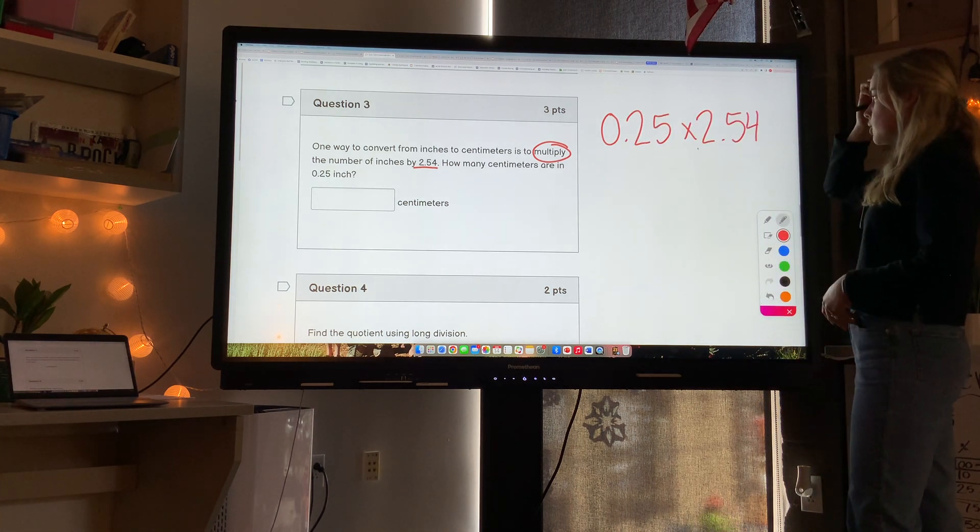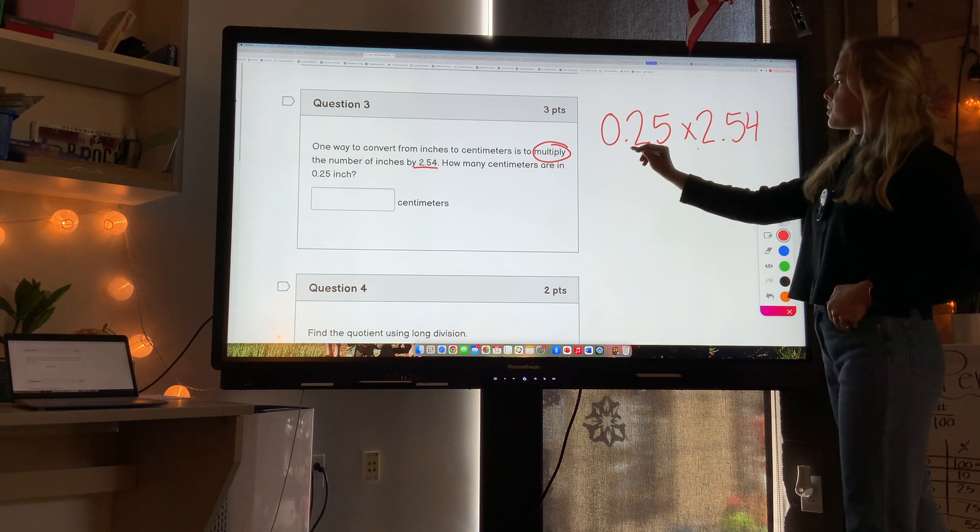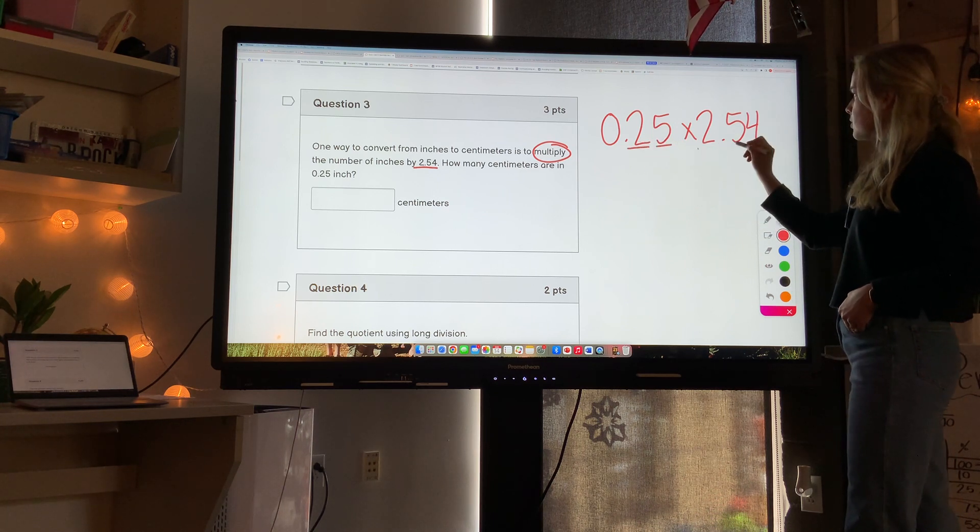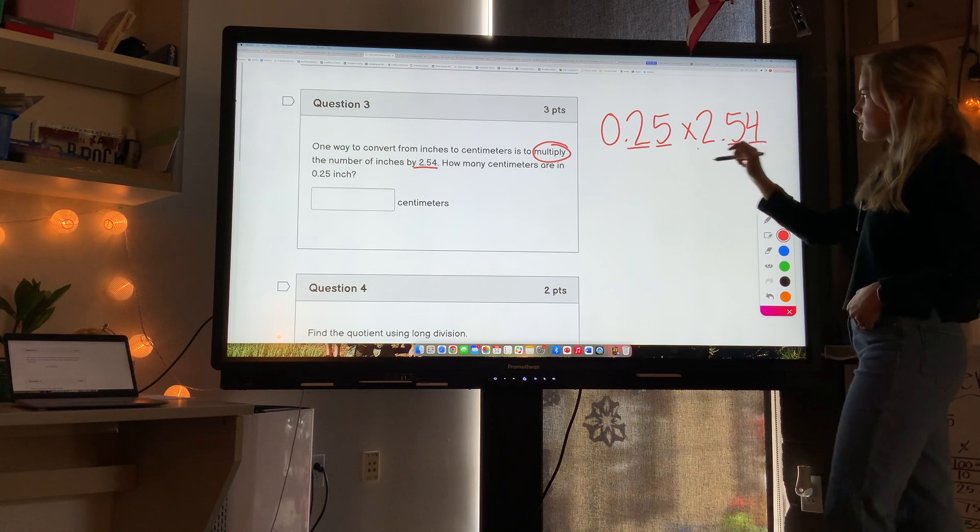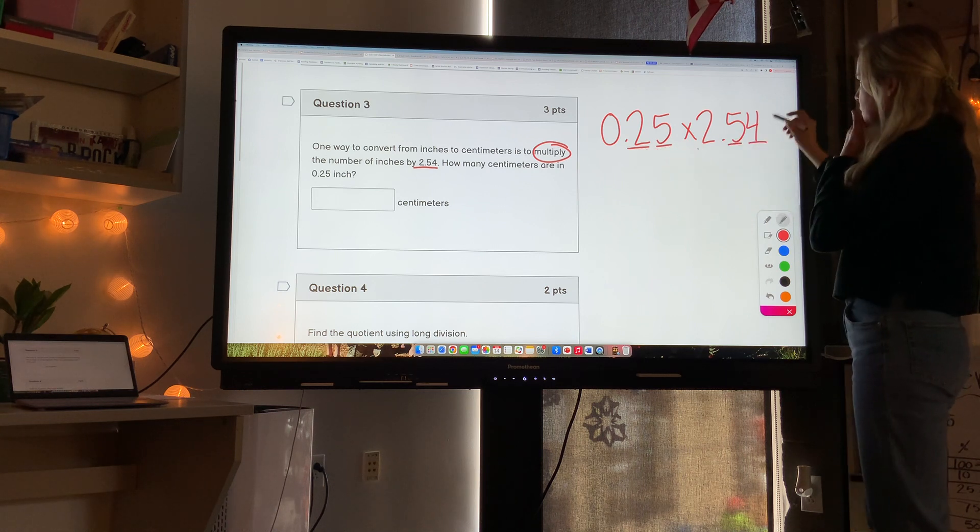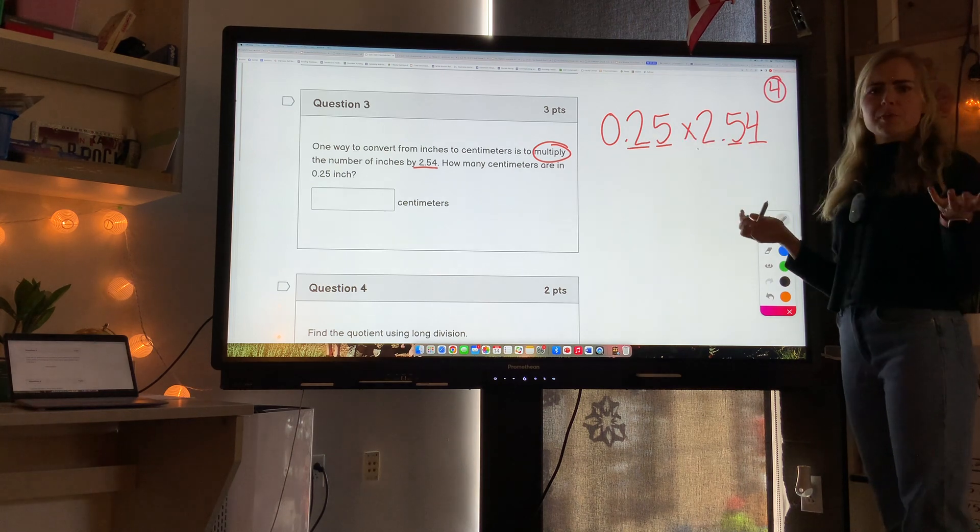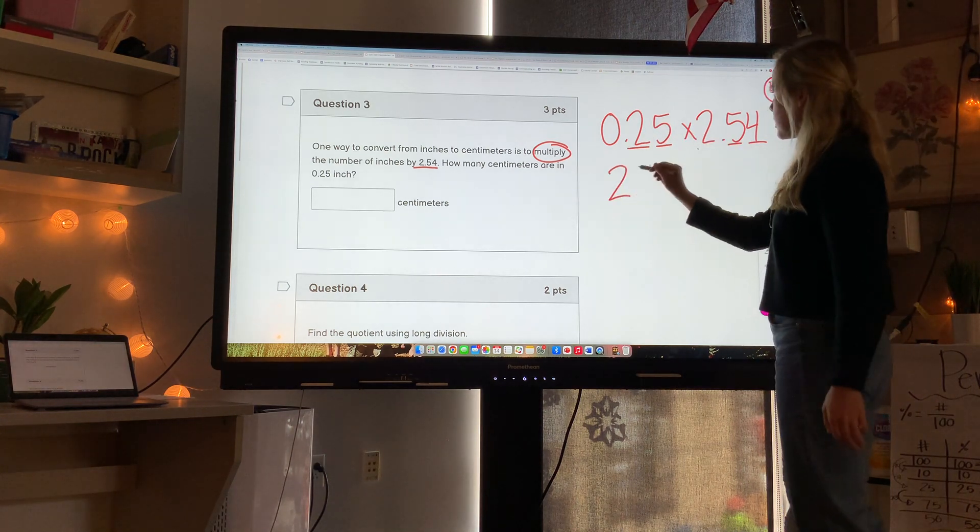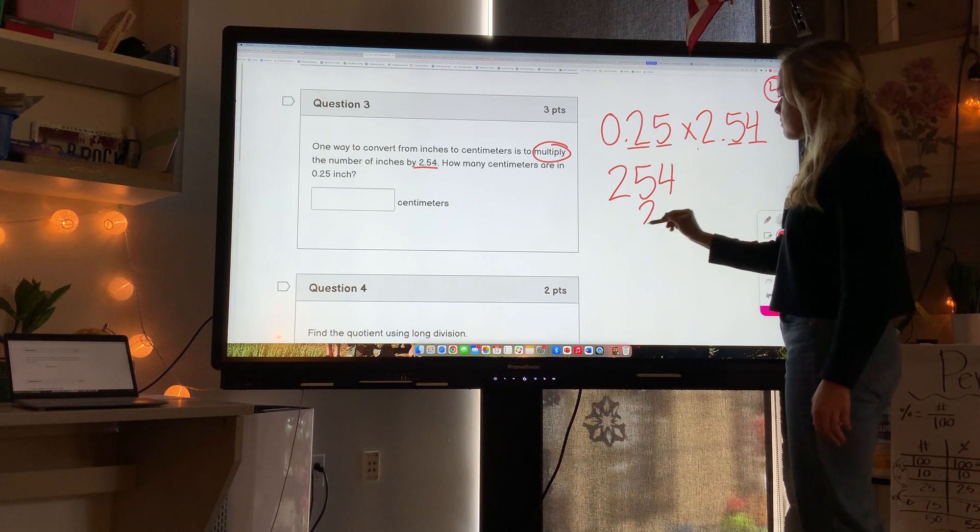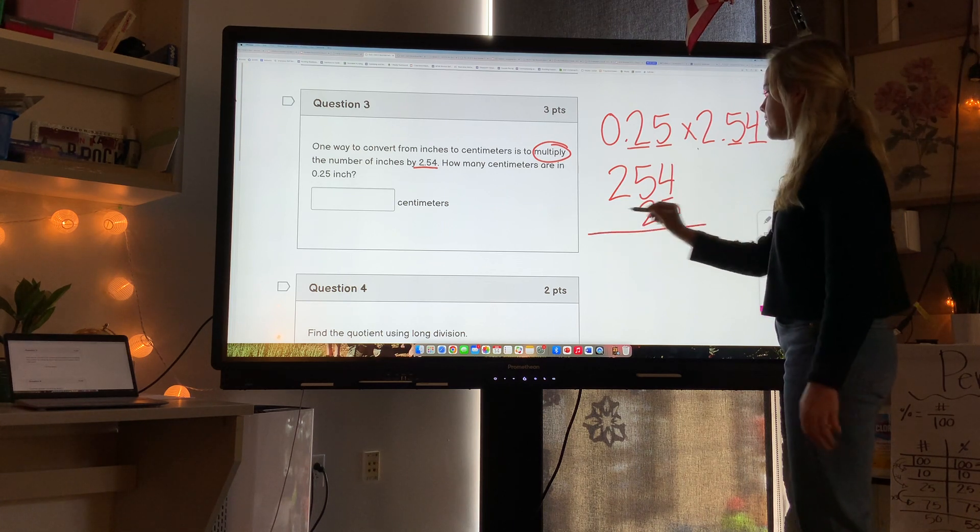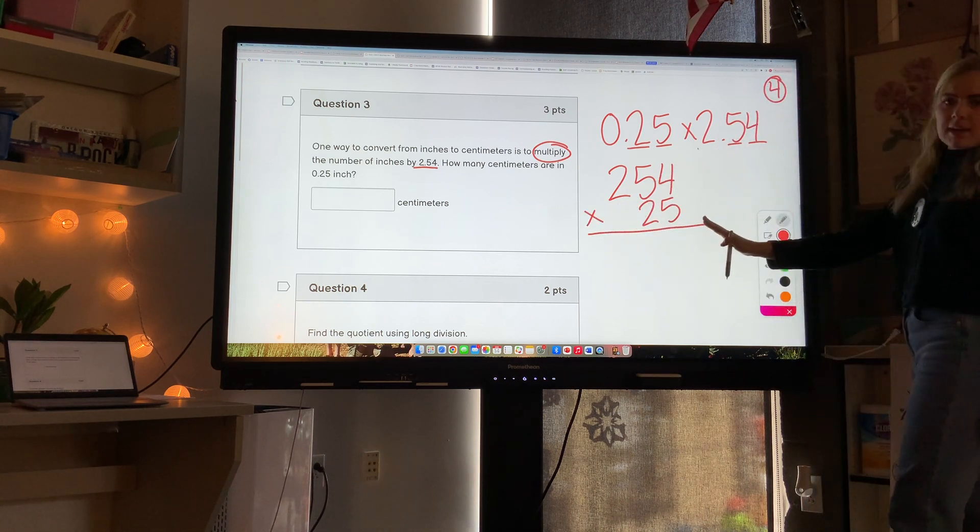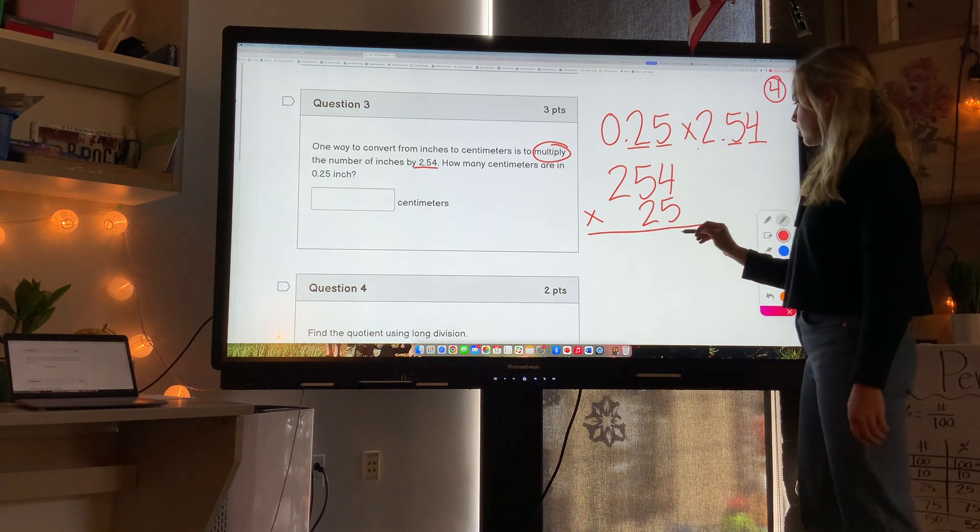Before I start multiplying, I'm going to count how many numbers are after the decimal point. So 1, 2 numbers, 1, 2, 3, 4 numbers. So in total, 1, 2, 3, 4 numbers are after the decimal point. Then I can erase the decimals and just multiply the whole numbers. So I'm going to multiply it as 254 times 25, and then I'll place my decimal back at the end.